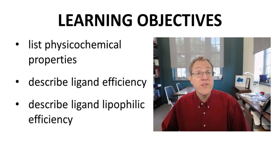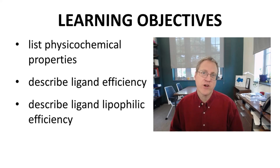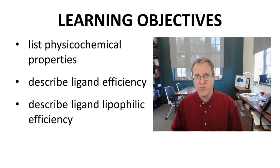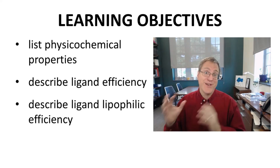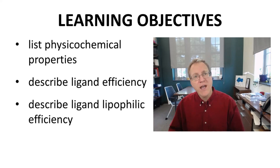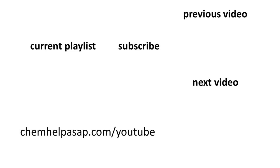Lead optimization campaigns like to start with early leads that have a high LLE value, maybe 4 or 5, and maintain that high LLE value throughout the optimization program. We have listed some physicochemical properties that are commonly discussed in drug discovery and described two composite parameters — ligand efficiency and ligand lipophilicity efficiency — that are used to guide lead optimization efforts.